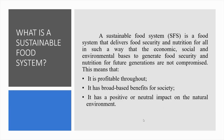What is a sustainable food system? A sustainable food system is a food system that delivers food security and nutrition for all in such a way that the economic, social and environmental basis to generate food security and nutrition for future generations are not compromised. This means that it is profitable throughout — economic sustainability — it has broad-based benefits for society — social sustainability — and it has a positive or neutral impact on the natural environment — environmental sustainability.